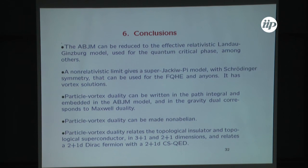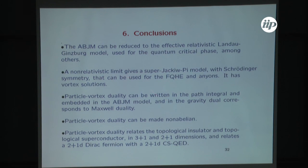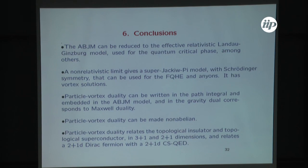To conclude: the ABJM model can be reduced to a Landau-Ginzburg model and to a super-Jackiw-Pi model with Schrödinger symmetry that has applications to condensed matter. Particle-vortex duality can be embedded into ABJM and corresponds to the Maxwell duality in the bulk. It can be made non-abelian, and it relates interesting condensed matter systems including topological superconductors and topological insulators. Thank you.